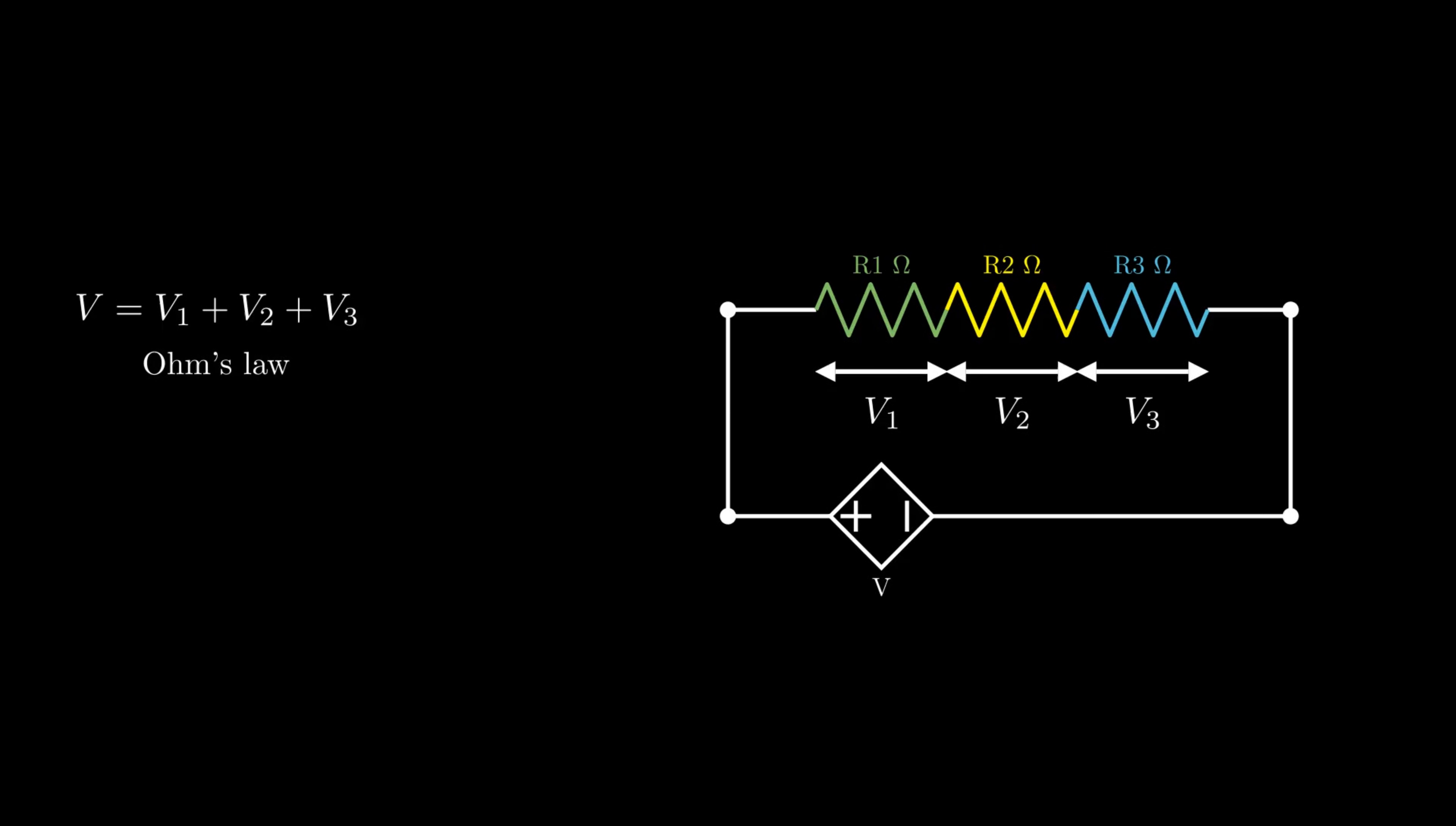Using Ohm's law, V equals IR, where R is the effective resistance due to all three resistances. As current remains constant for all the resistances, IR equals the sum of IR1, IR2 and IR3. Taking I as common factor we get R equals R1 plus R2 plus R3. So effective resistance of a series combination is found by simply adding all the resistances of each resistor.